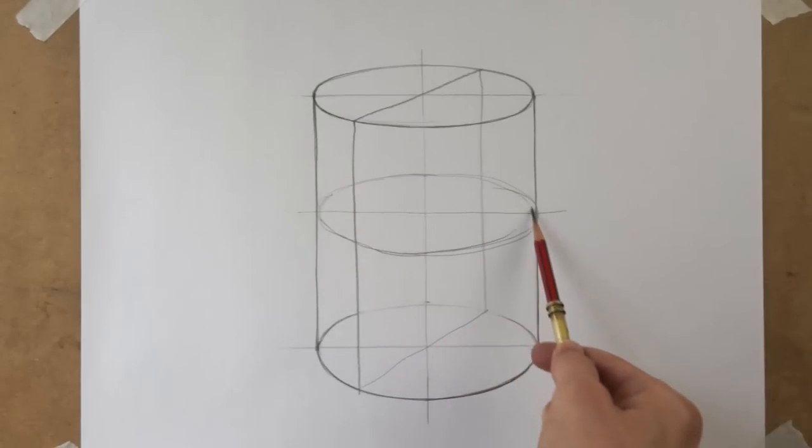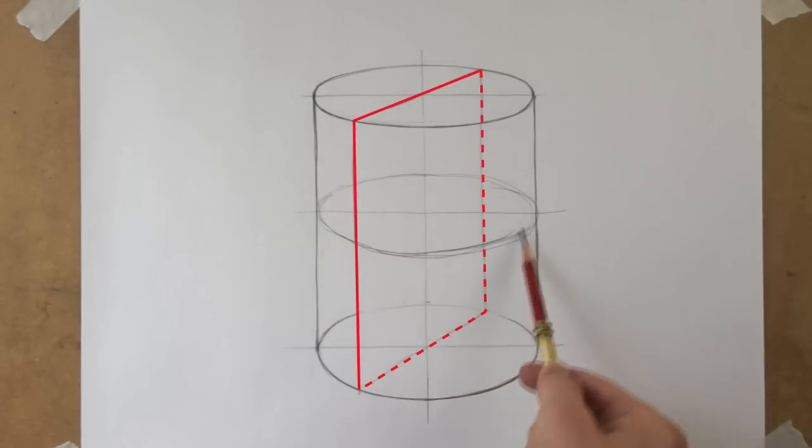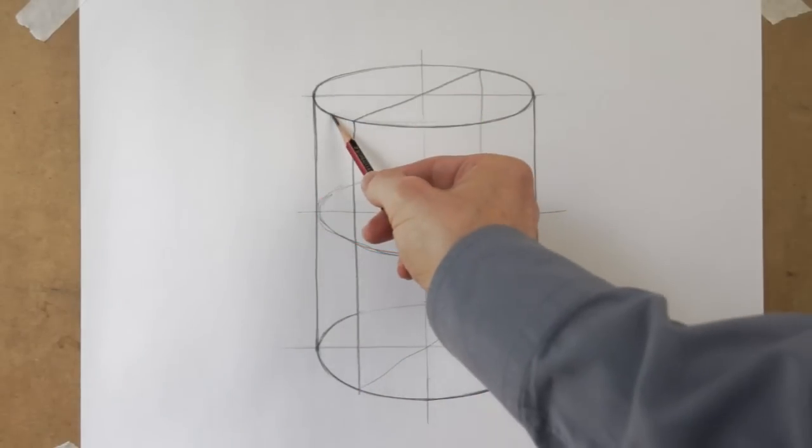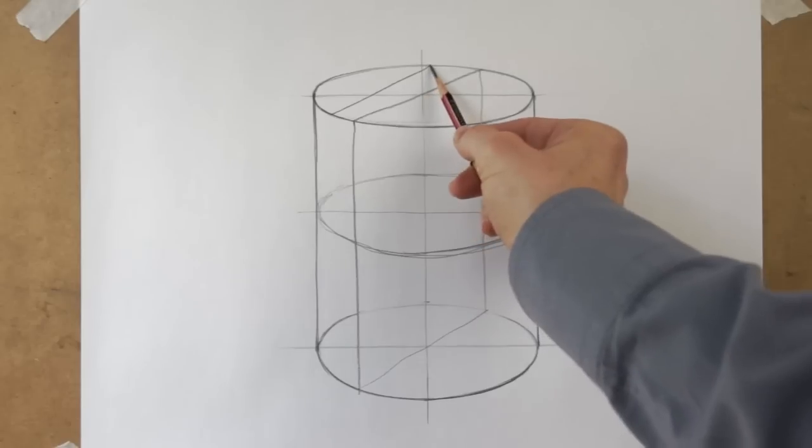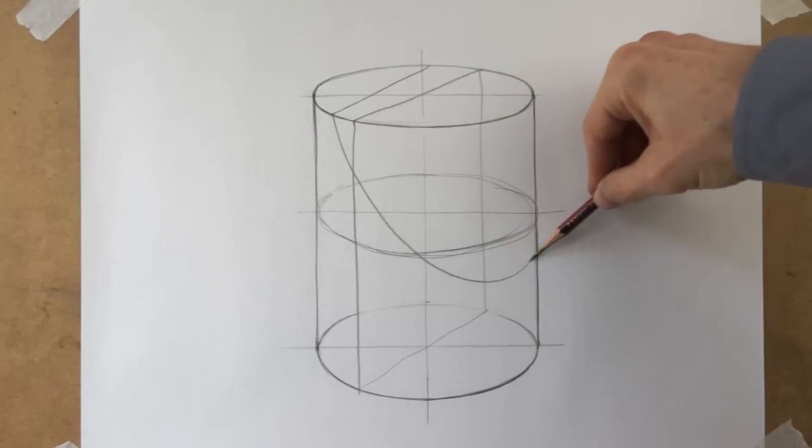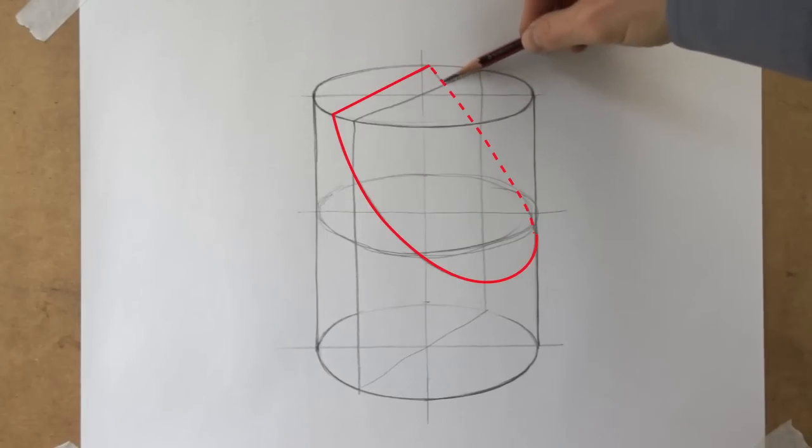Consider also the cylinder. An upright cylinder has rectangular vertical contours and circular horizontal contours. Perspective makes these shapes look like trapezoids and ovals, respectively. Tilted planes that dissect a cylinder produce ovals and truncated ovals.